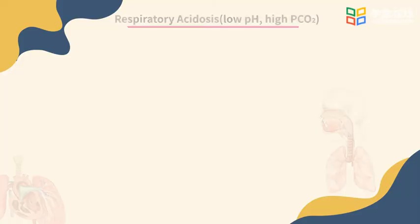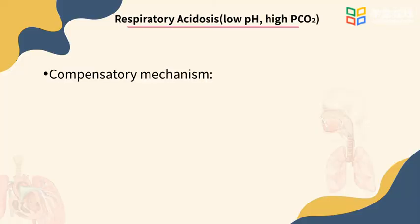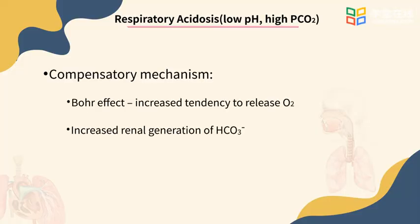In respiratory acidosis, the body compensates by hemoglobin unloading the bound oxygen to the tissues more easily, and increasing generation of bicarbonate from the kidneys. Please note that you must consider the causes of acid-base disturbances and determine which ones could escalate to a medical emergency. The same thing is true for the other types of acid-base disturbances.